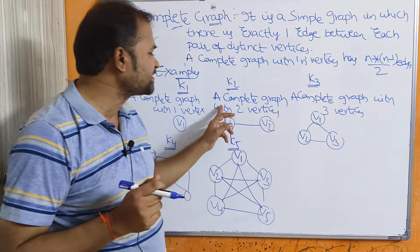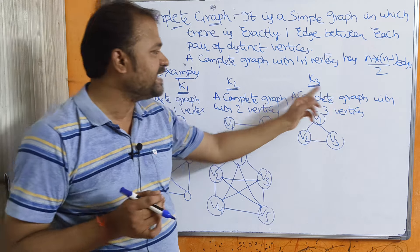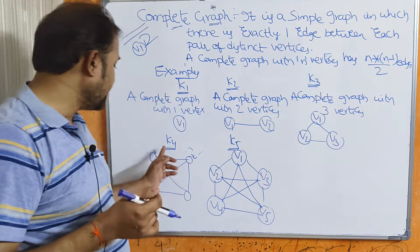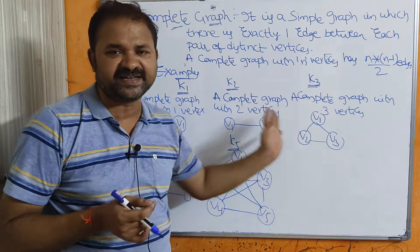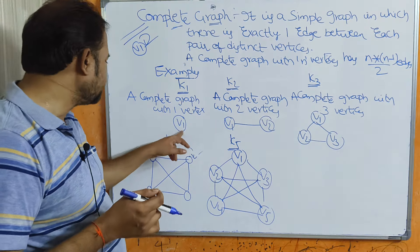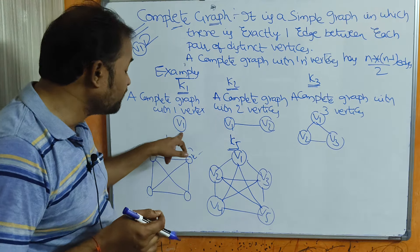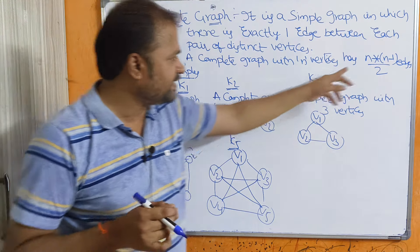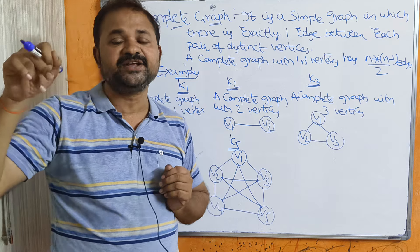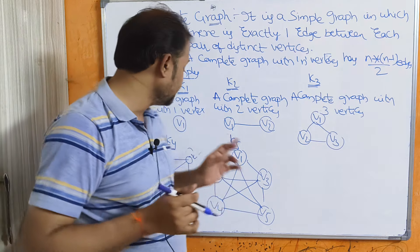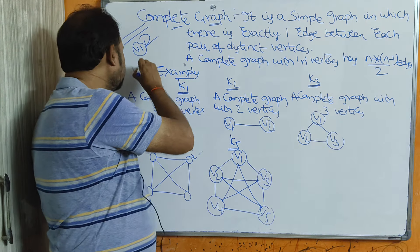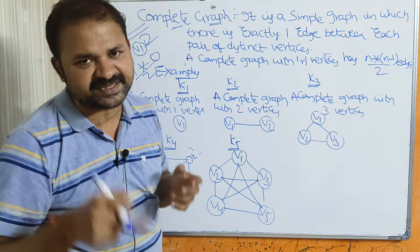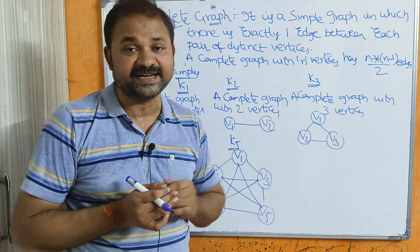K3 means a complete graph with 3 vertices. K1 has only 1 vertex and using the formula 1×(1−1)/2 = 0 edges, so this graph doesn't contain any edges.